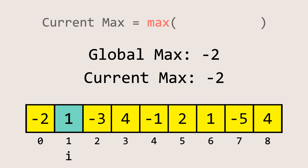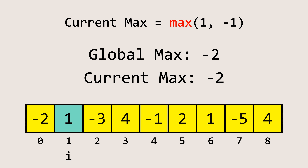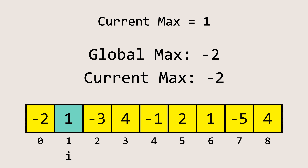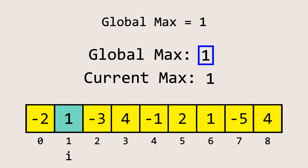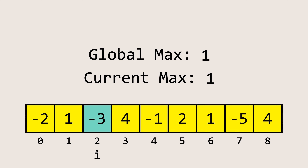At this iteration, we have to update the current maximum value. First, we take the current element, which is 1 here, and compare it with the sum of the current element and the current maximum value, which is negative 1. Then, we take the maximum of these two values, which is 1. Next, we update the current maximum to 1. And now, we update the global maximum to the maximum of the current maximum and the global maximum, which is 1 here. So, we update it to 1.